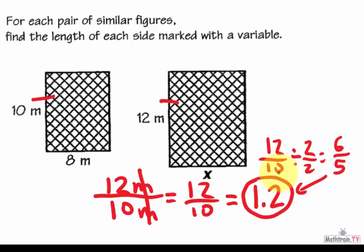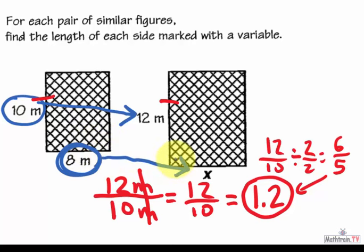Now, what is that? 1.2 is a scale factor. If I took 10 and I multiply it by 1.2, I get the new side length of 12. Therefore, since it's similar, when I take the 8 and I multiply it again by the scale factor, I'll get the value of what x is.